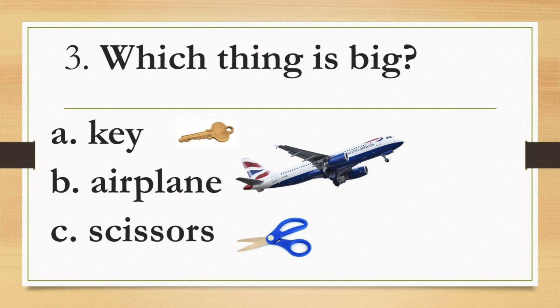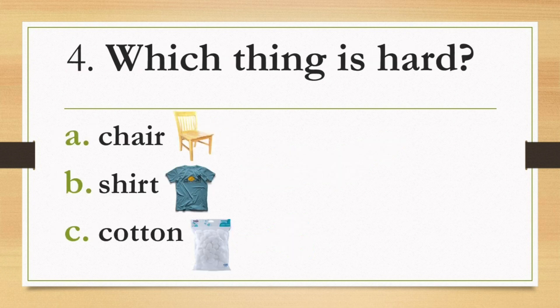Number 3: Which thing is big? A. Key, B. Airplane, C. Scissors. Number 4: Which thing is hard? A. Chair, B. Shirt, C. Cotton.